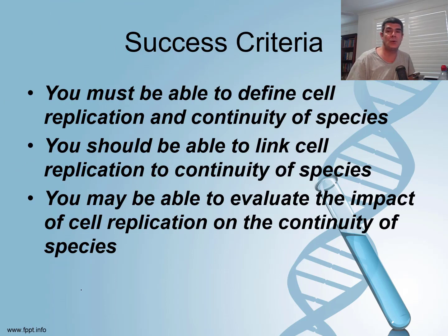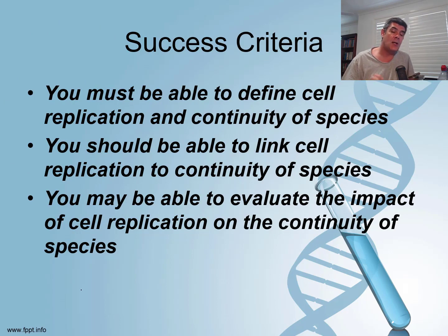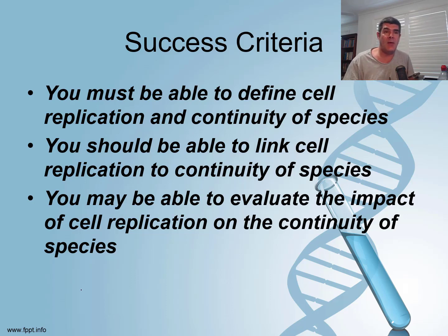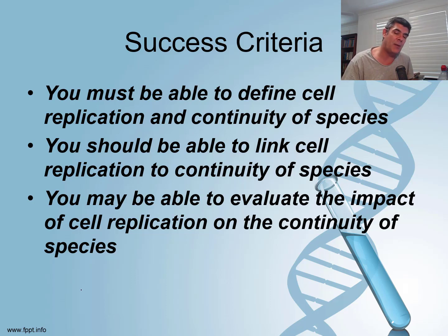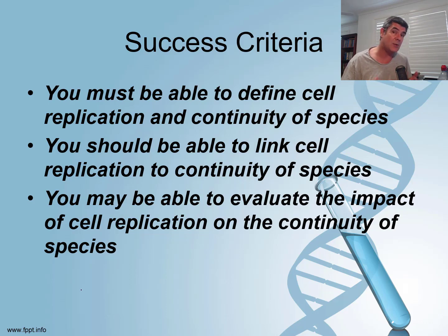Three levels again to try and measure yourself against. Firstly, you obviously need to know these terms — cell replication and continuity of species — and hopefully you can link these two ideas together in some way. Beyond that, to deepen your response, you want to be able to evaluate the impact of cell replication on the continuity of species. As always in science courses, we want to make sure that you have evidence you can use in support of your arguments and evaluation.